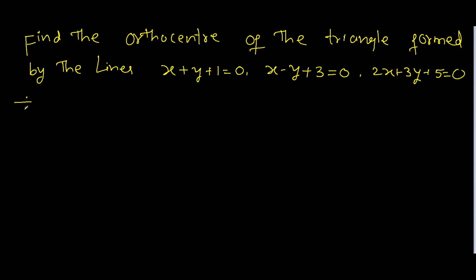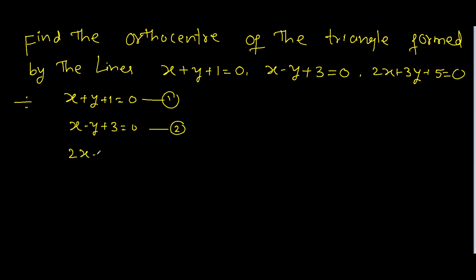Find the orthocentre of the triangle formed by the lines: x + y + 1 = 0, x - y + 3 = 0, and 2x + 3y + 5 = 0. The first line is x + y + 1 = 0, the second line is x - y + 3 = 0, and the third line is 2x + 3y + 5 = 0.